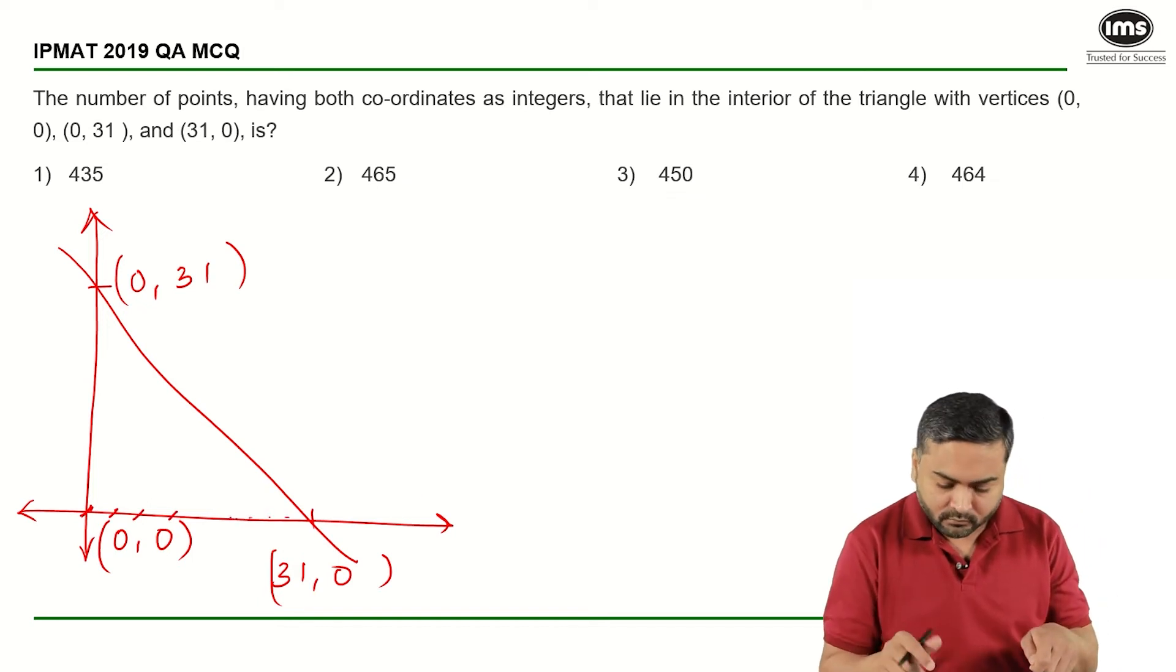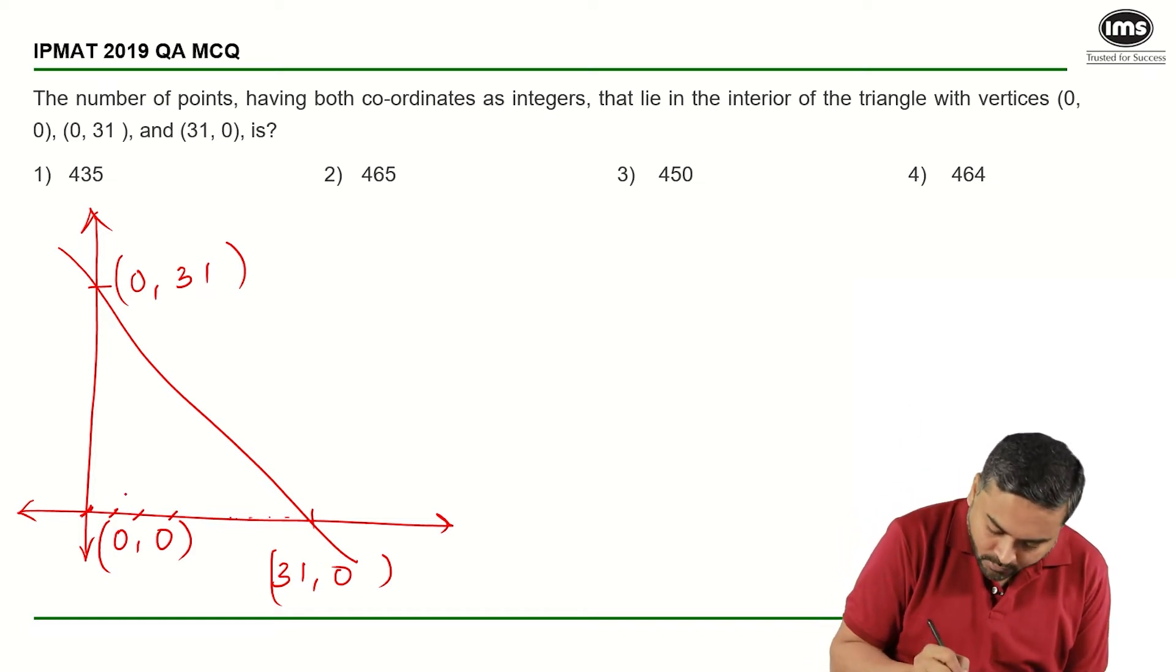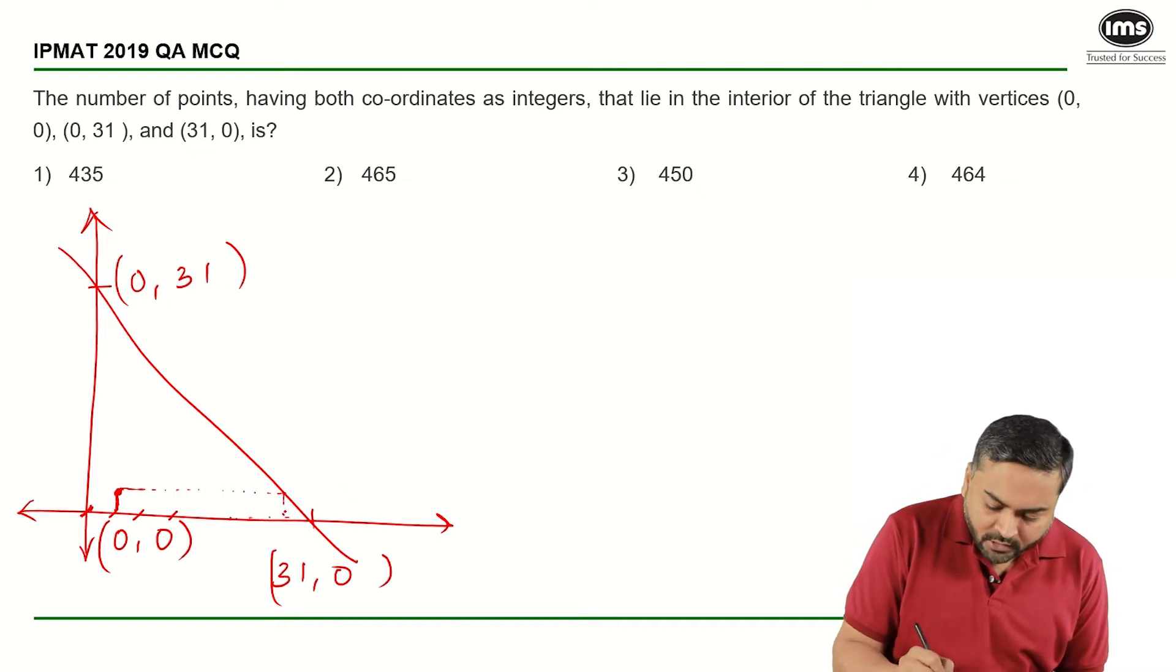So let us say if I start with x equals 1, there will be 1 point here. And if I try to plot out this like this, for x equals 30, this point will again lie on the circumference, so I have to take this point which is 29.